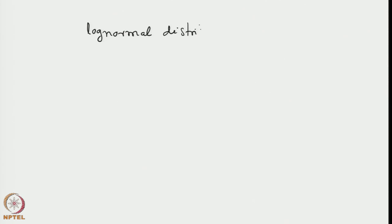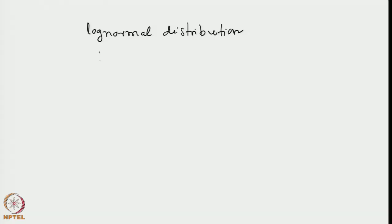Apart from this, there are several distributions which natural systems obey that we have not mentioned in previous lectures. For example, there is a distribution called log normal distribution. Log normal distribution is relevant when the occurrence of the random variables happens over several decades of scale — for example, the size of dust particles suspended in the atmosphere, which can vary from about one nanometer to almost a millimeter, a scale of about 10 to the power 6.